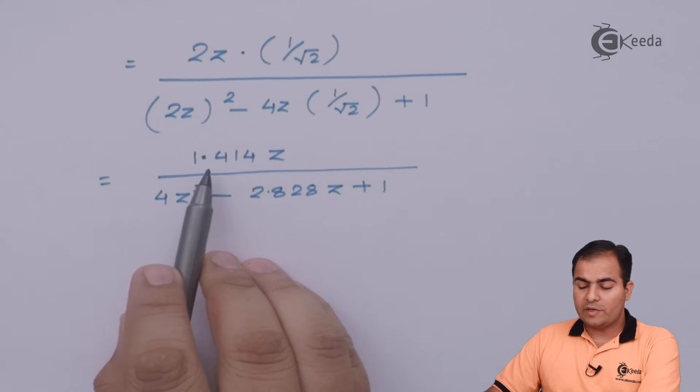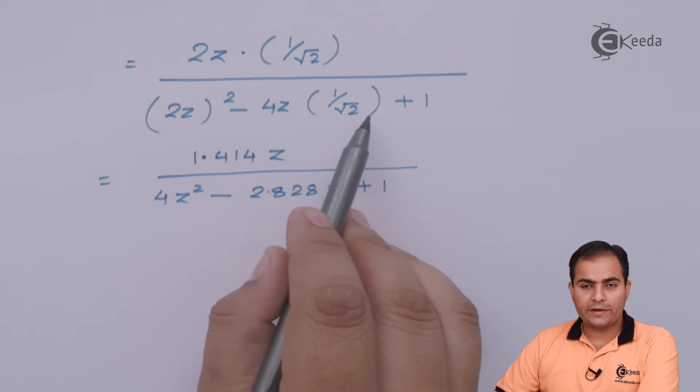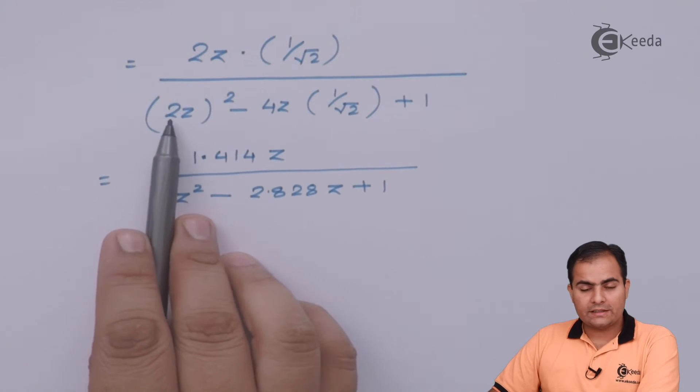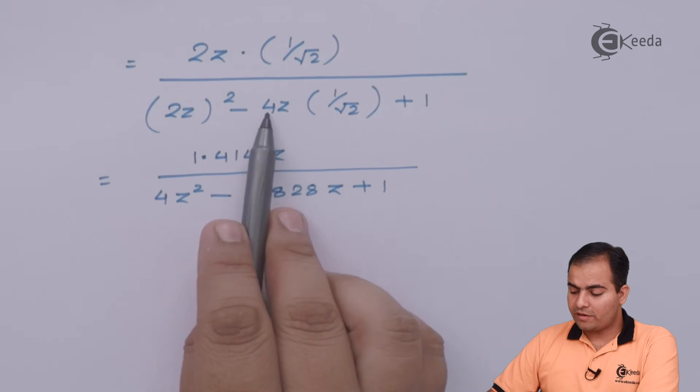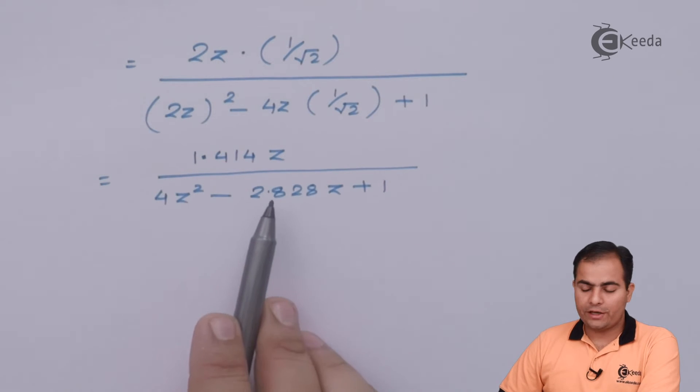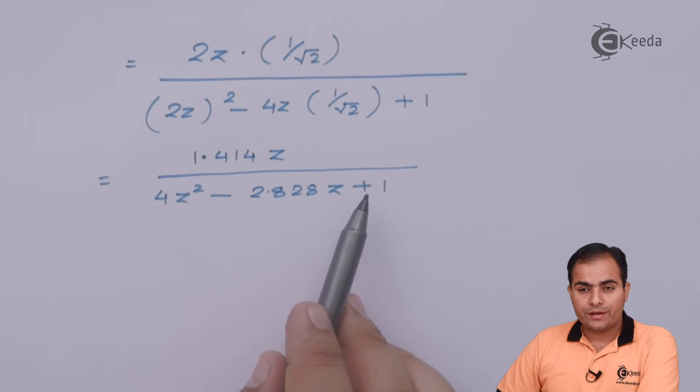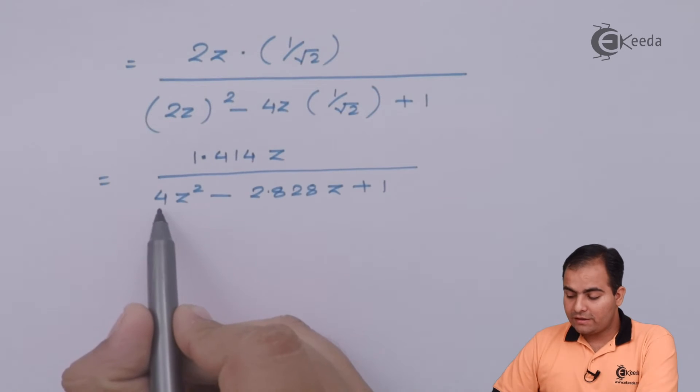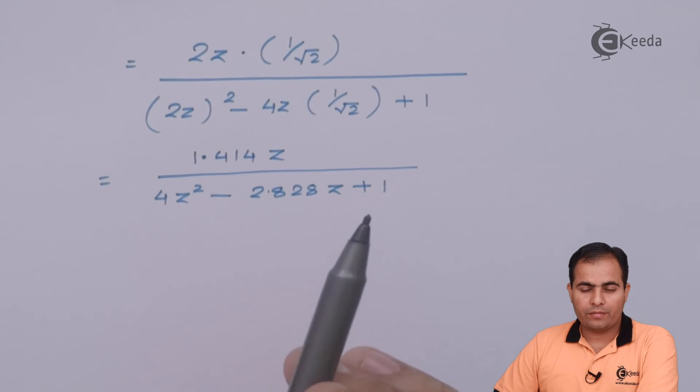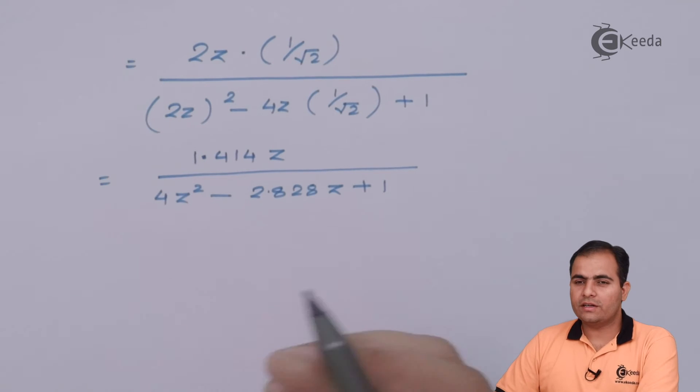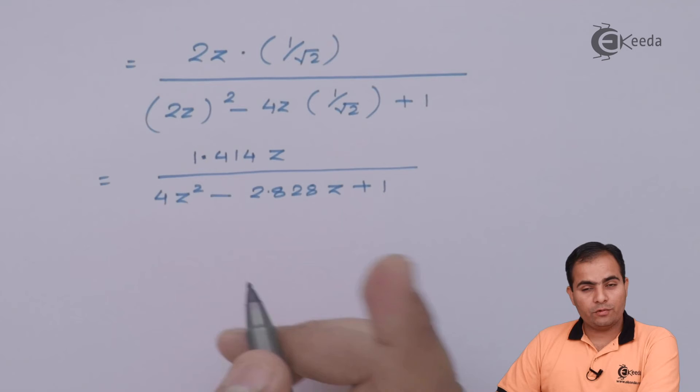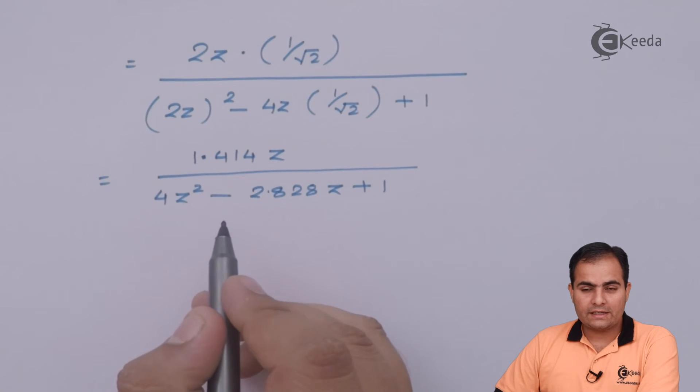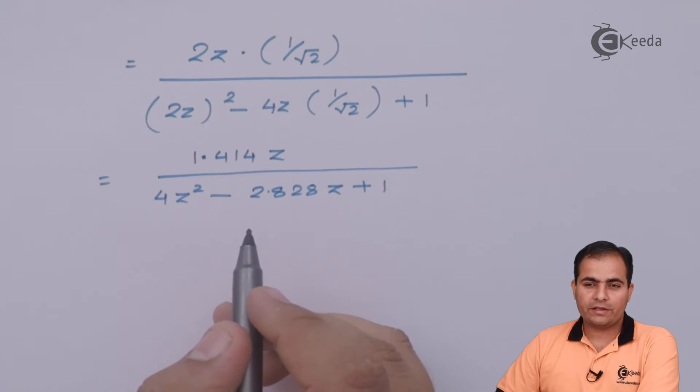So look at here, I have multiplied 2 with 0.707 and 4 with 0.707 and got this result: 1.414·Z. After taking square inside this bracket we have 4Z². Now 4 multiplied with 0.707 gives 2.828·Z plus 1. If you want you can stop here or take 4 common from the whole bracket, but my suggestion is just stop here so you will get full marks and your time will be saved. This is the Z-transform of (0.5)^n · sin(π/4 · n) · u(n).